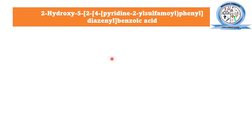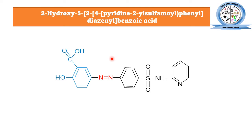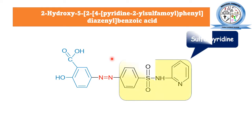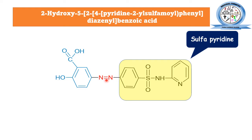Now let's discuss the chemical structure of sulfasalazine. You may observe that there are different regions in its chemical structure. One region is known as the sulfapyridine, which is substituted with the heterocyclic pyridine ring. The other region is the sulfanilamide region, and at the para position an amino functional group is present.